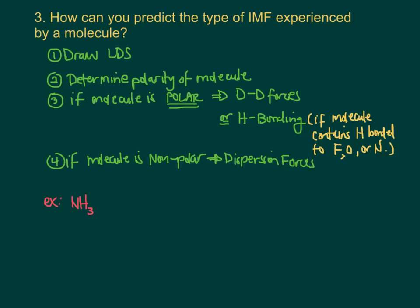Let's run through a quick example — NH3. The Lewis dot structure for NH3 ends up looking like this, and because this is a trigonal pyramidal shaped molecule, it actually looks something like this.